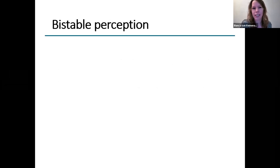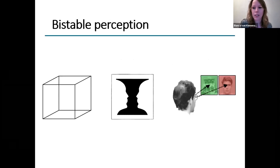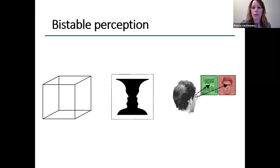A special case of this is bistable perception. Here we have an ambiguous stimulus that has two possible interpretations that can't be reconciled, and as a result, our perception fluctuates or alternates between the two. There are some examples here: on the left, the Necker cube, which can be perceived as a cube with its front facing either upper right or lower left. In the middle, the face-vase illusion where you see two faces or a vase. And on the right, binocular rivalry, where each eye gets a different input and our perception alternates between the two.